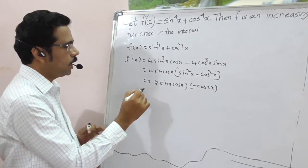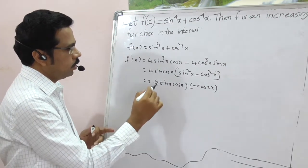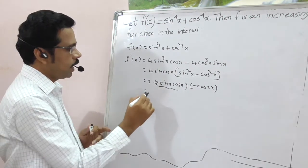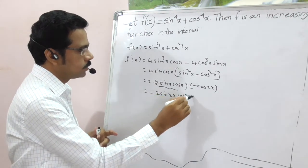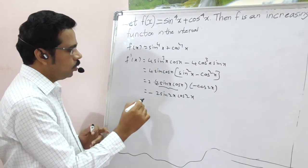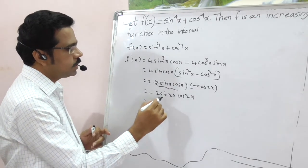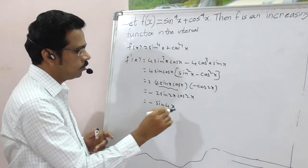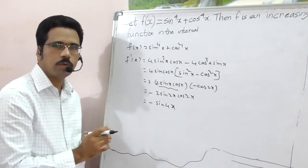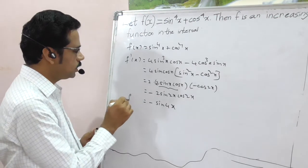Now clearly, this is what? 2sin x cos x is sin 2x. You can write it as minus 2sin 2x cos 2x. So this is equal to minus, what is 2sin 2x cos 2x? Very good. That is nothing but sin 4x. We are using sin 2a formula, 2sin a cos a. This is f'(x).